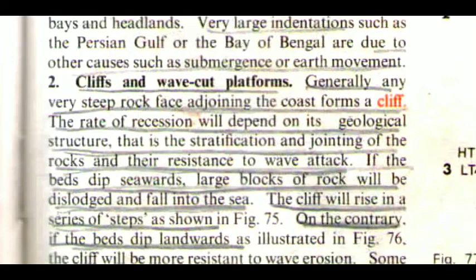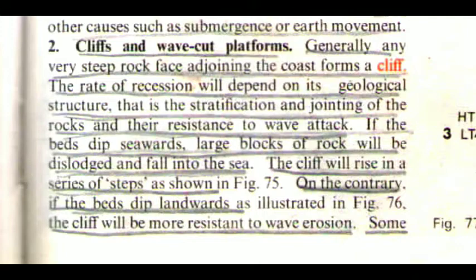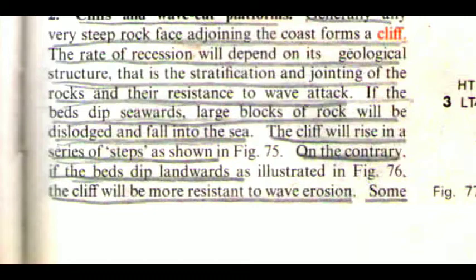The second one is cliffs and wave-cut platforms. Generally, any very steep rock face adjoining the coast forms a cliff. The rate of recession will depend on its geological structure, i.e. the stratification and jointing of the rocks and their resistance to wave attack. If the beds dip seawards, large blocks of rocks will be dislodged and fall into the sea, and the cliffs will rise in a series of steps. On the contrary, if the beds dip landwards, the cliffs will be more resistant to wave erosion.